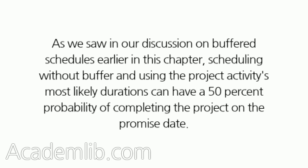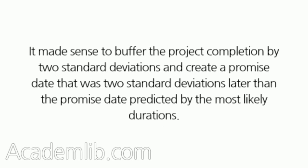As we saw in our discussion on buffered schedules earlier in this chapter, scheduling without buffer and using the project activities' most likely durations can have a 50% probability of completing the project on the promised date. It made sense to buffer the project completion by two standard deviations and create a promise date that was two standard deviations later than the date predicted by the most likely durations.